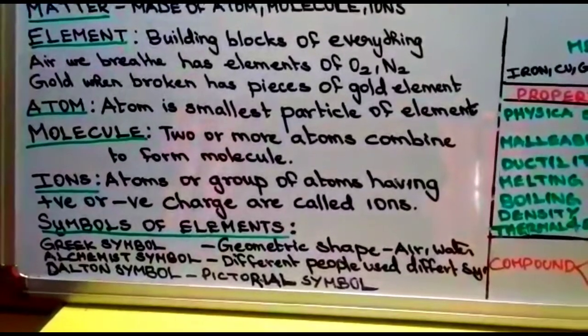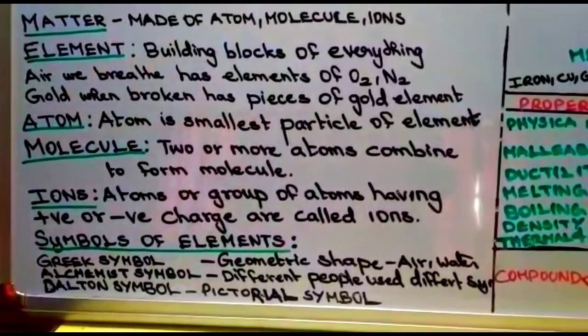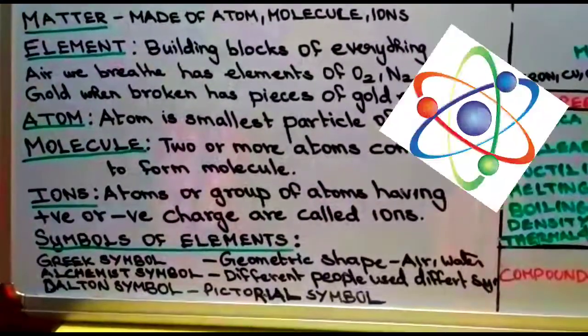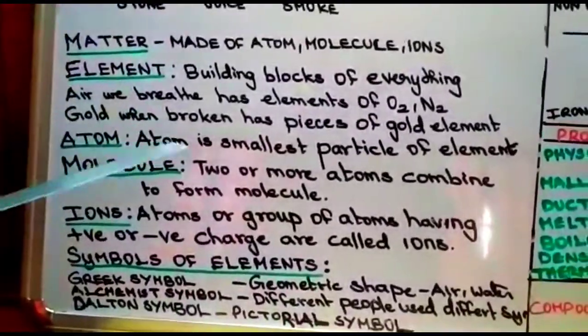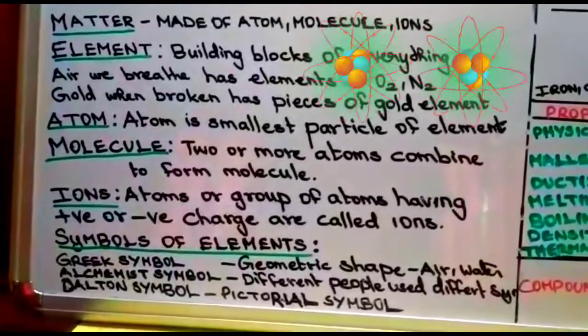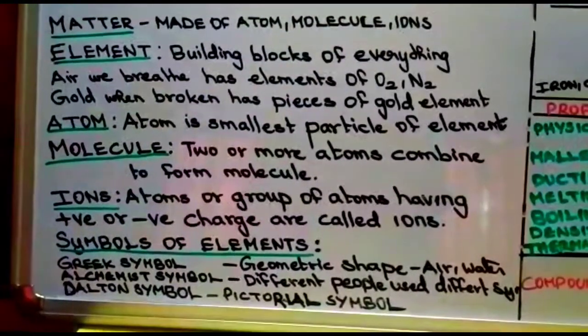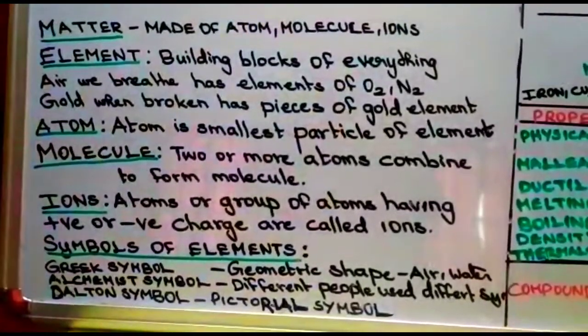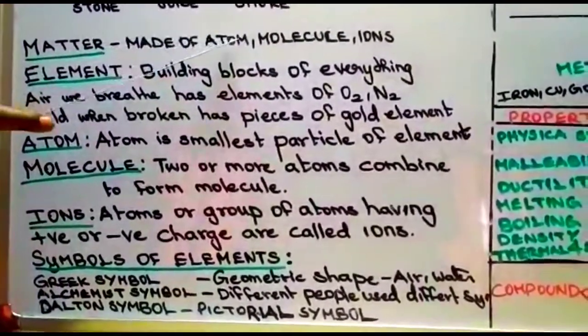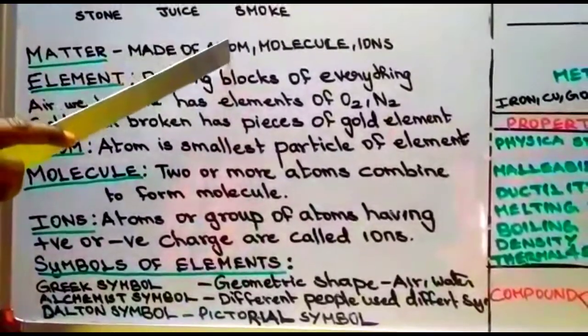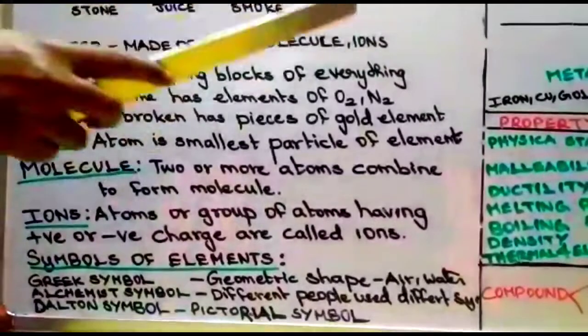Matter is made up of atom, molecule, and ions. An element is the building block of everything. Atom is the smallest particle of an element. Molecule is when two or more atoms combine together. Ions are atoms or groups of atoms which have a positive or negative charge.